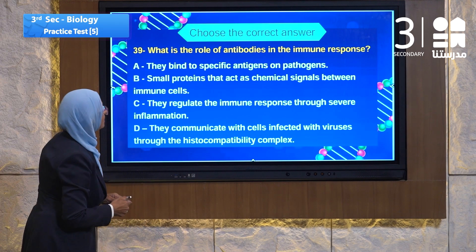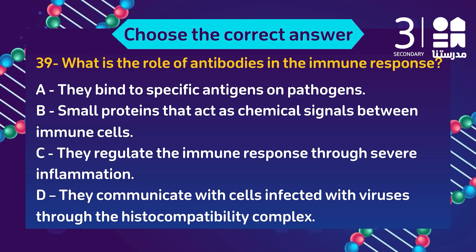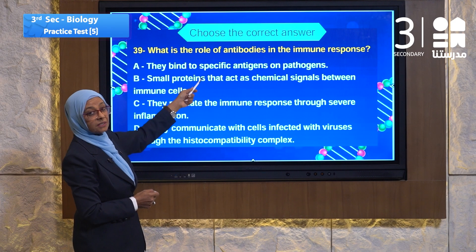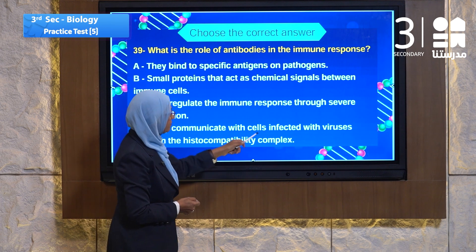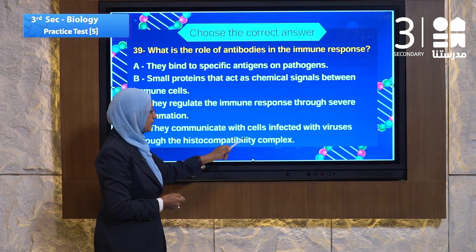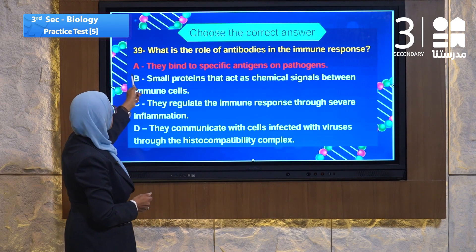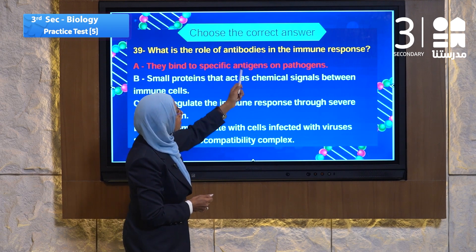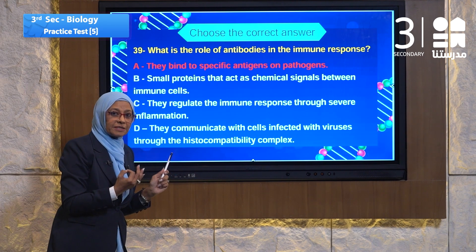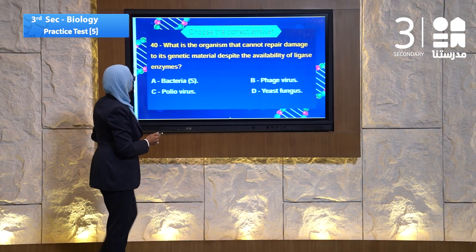Question 39 is about antibodies and immunity. What is the role of antibodies in the immune response? The choices are: they bind to specific antigens on pathogens; small proteins acting as chemical signals between immune cells; they regulate immune response through inflammation; or they communicate through histocompatibility complex. The answer is A — they bind to specific antigens on pathogens, because antibodies are specific.